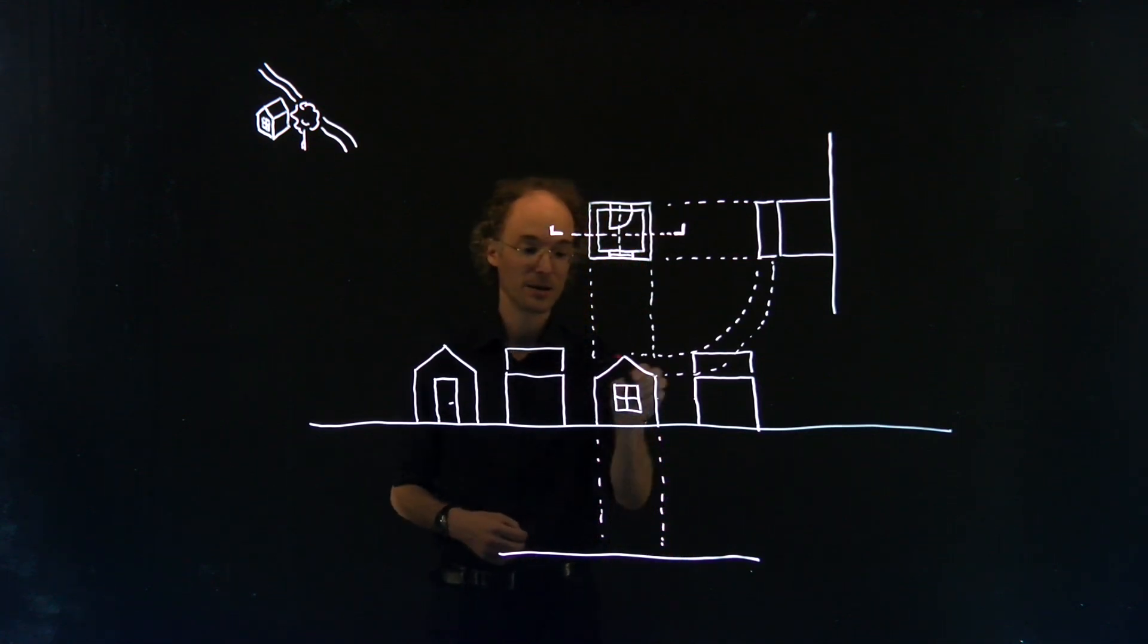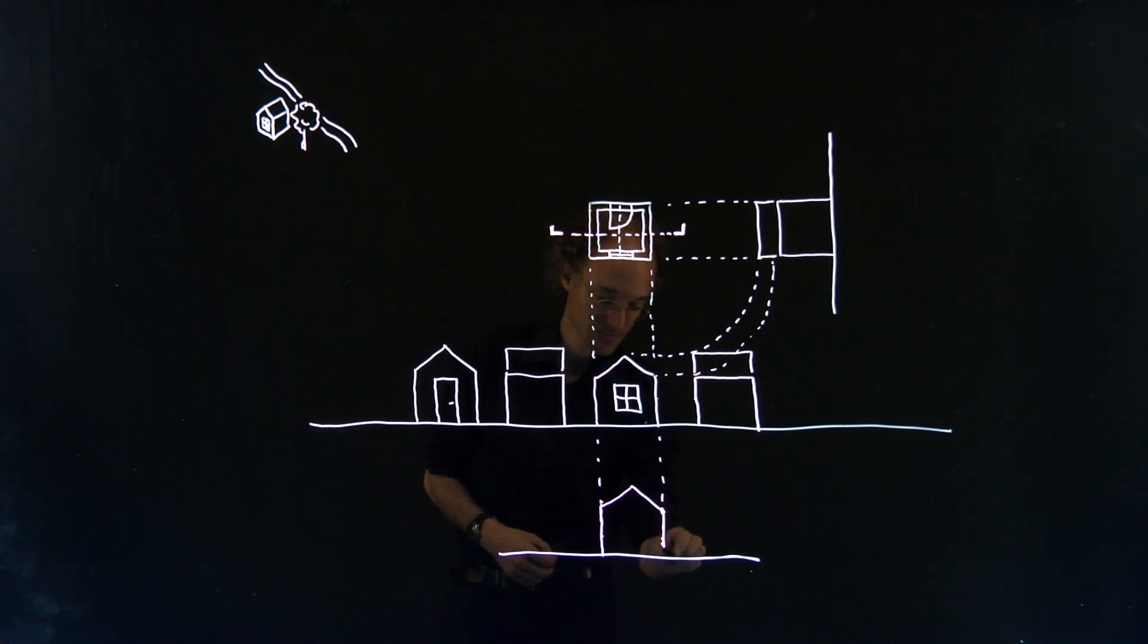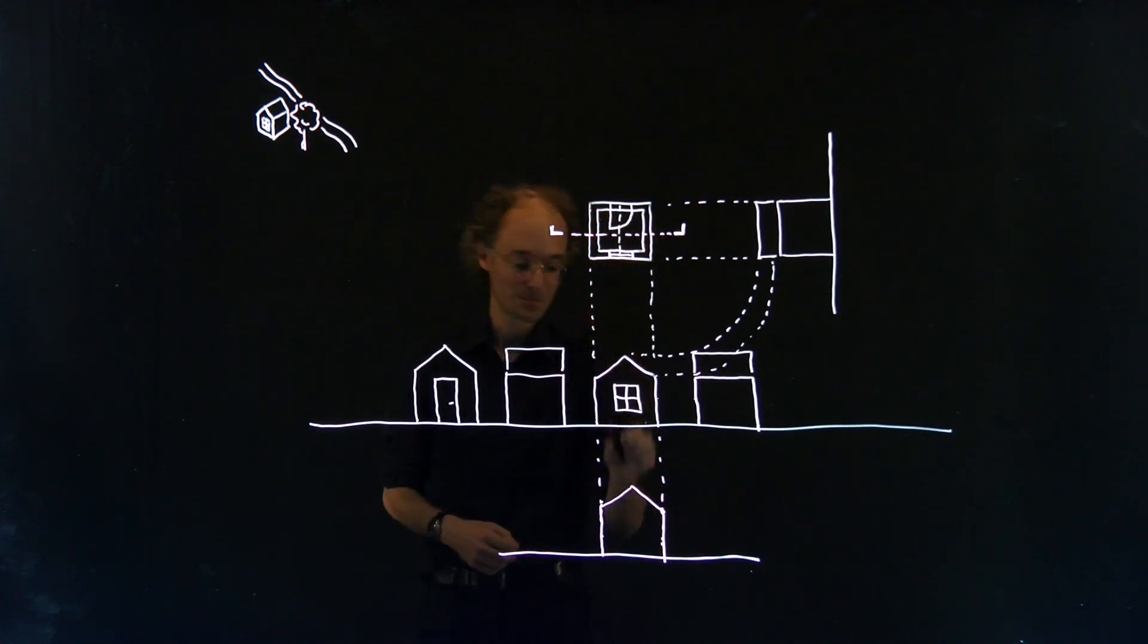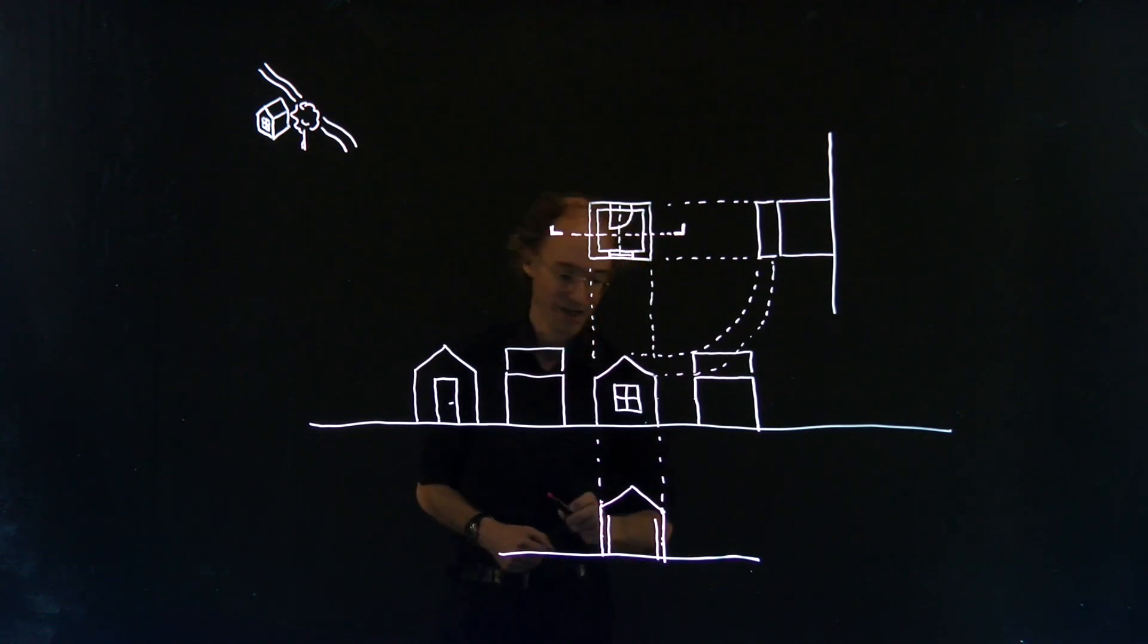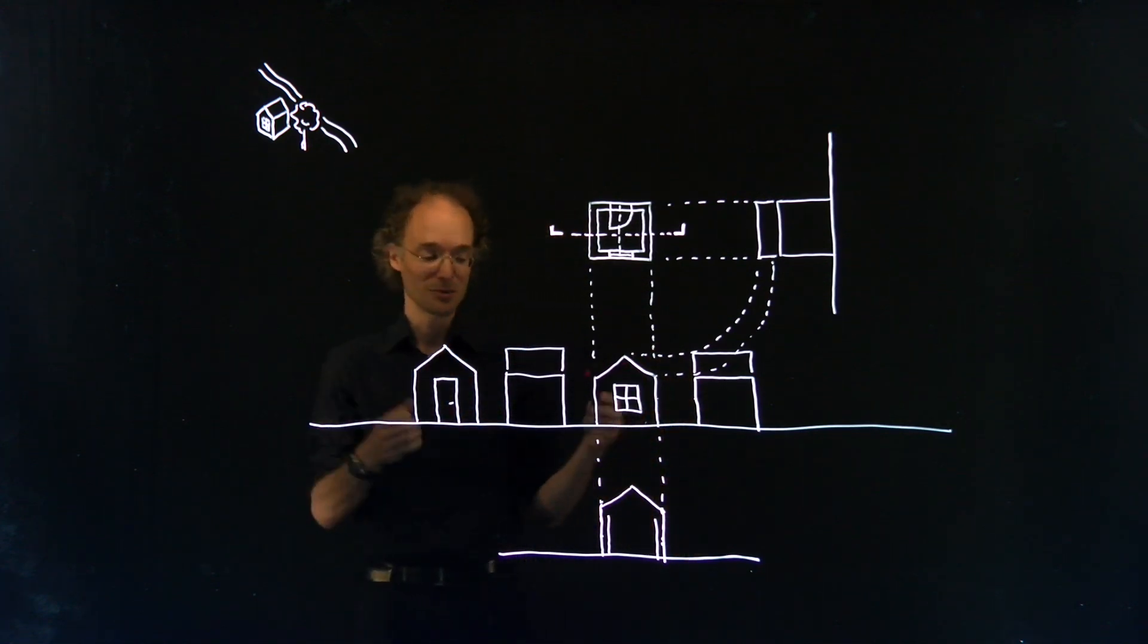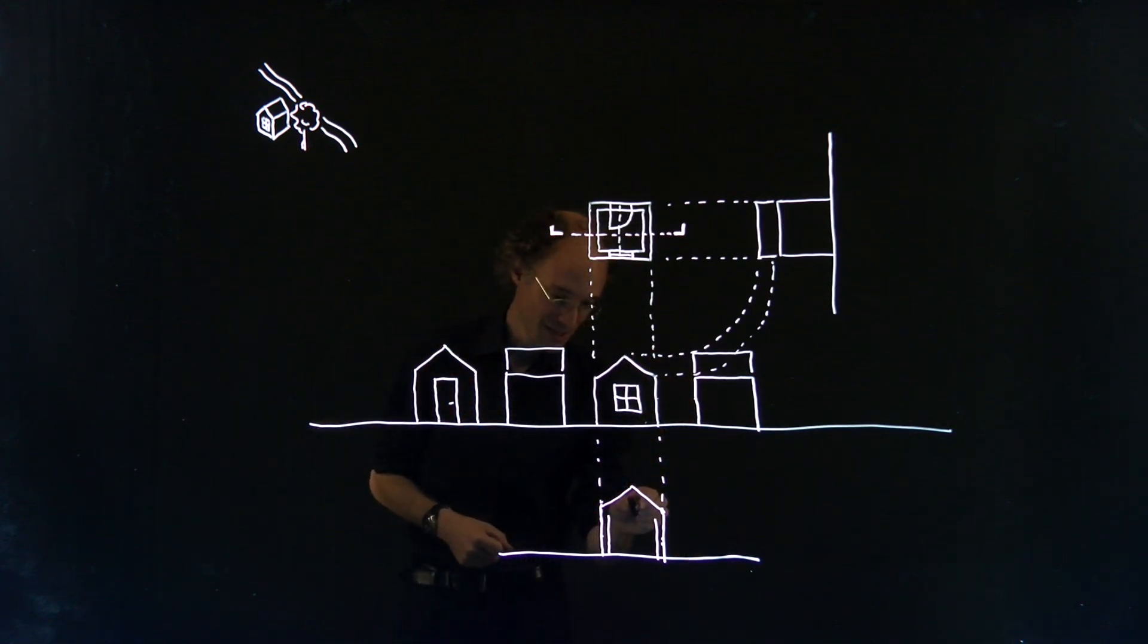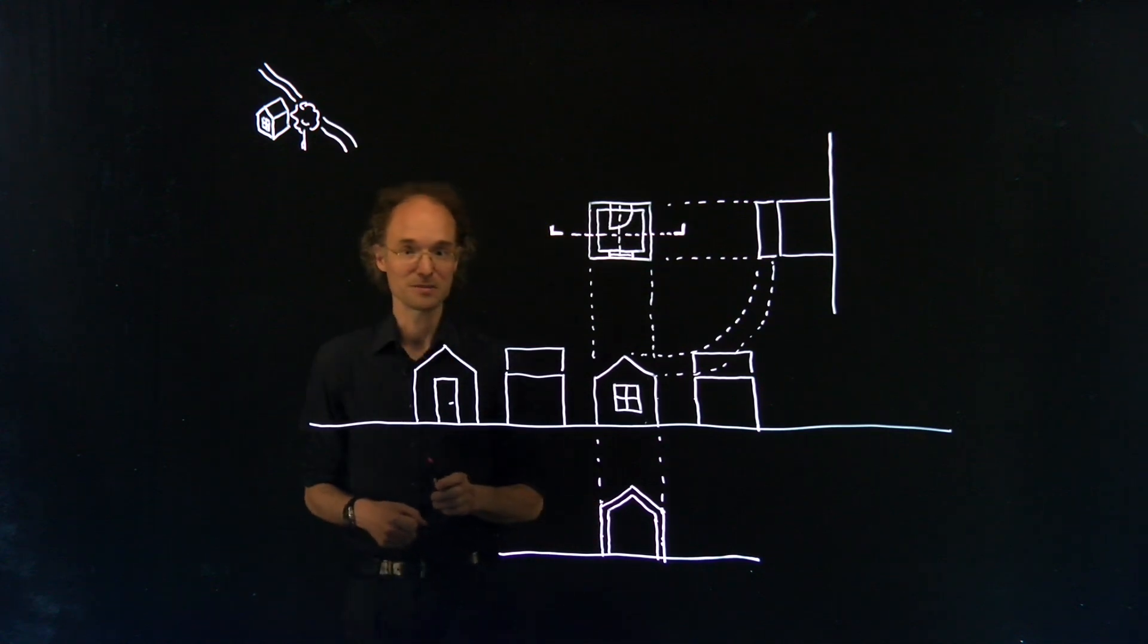And I know the exterior shape of the building from the elevation I've just drawn. I also know the walls have thickness. And now I have to decide, or the architect, the designer has to decide, what the shape of the ceiling would be. Let's assume that the ceiling follows the line of the roof. So I have a section now.